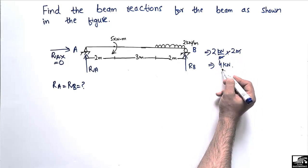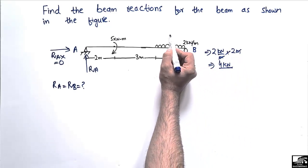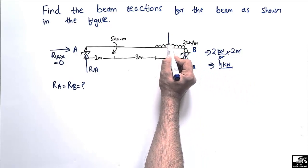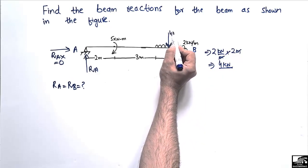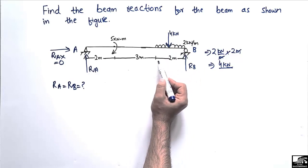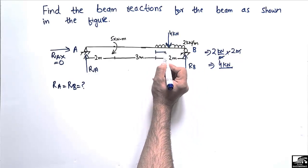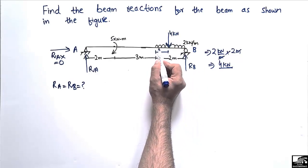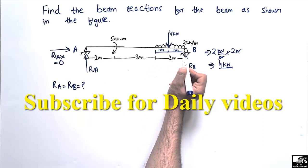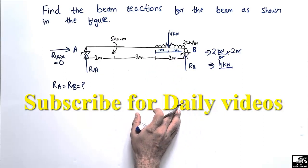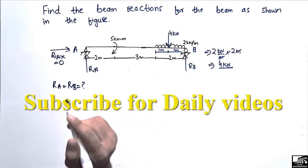The units of meters cancel, leaving us with kilonewtons: 2 × 2 = 4 kilonewtons. This 4 kilonewton concentrated load acts at the center of the distributed load — since the distributed length is 2 meters, it acts at 1 meter from each end of the distributed load region.